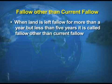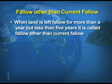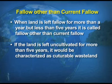The next category is fallow other than current fallow. When land is left fallow for more than one year but less than five years, it is called fallow other than current fallow. If land is left uncultivated for more than five years, it would be characterized as culturable wasteland — land not fit for cultivation.